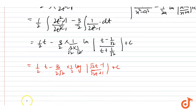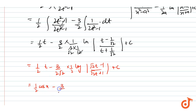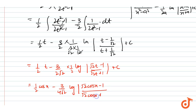Now replacing t back with cos x, the result becomes one half of cos x minus 3 over 4 root 2 times log of (root 2 cos x minus 1) over (root 2 cos x plus 1) plus c.